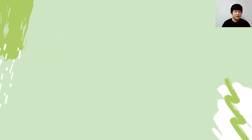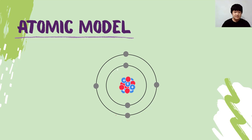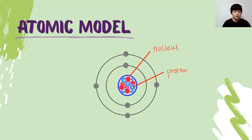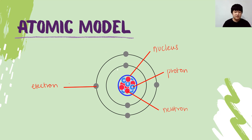Let's look at how an atomic model looks. This is an example of an atomic model. As you can see, in the centre is the nucleus. In the nucleus, we have the presence of proton that carries a positive charge. In the nucleus as well, we have the presence of neutron, which is neutral. Last but not least, we have the presence of electron that has a negative charge. That is how an atom is built — we have electrons surrounding the nucleus.